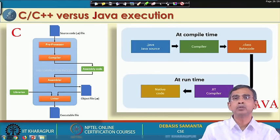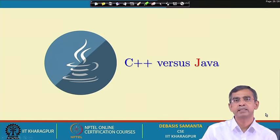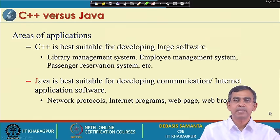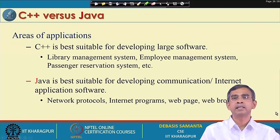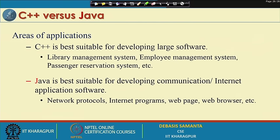This is the idea about the execution of two different programming concepts - C/C++ and Java. Apart from this, there are few more differences between these two object oriented programming languages C++ and Java. C++ is usually preferable for developing very large software such as a library management system, employee management system, or passenger railway reservation system. Whereas Java can be used to develop all these kinds of systems, but in addition, Java is a very special programming language which is suitable for developing particularly communication or internet application related software.